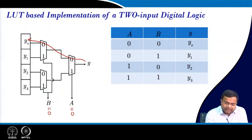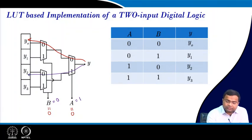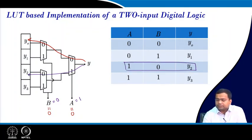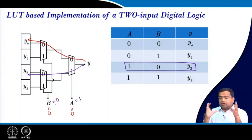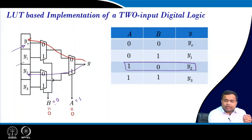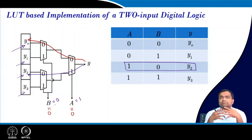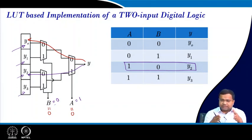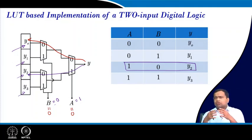If A is 0 and B is 1, it will route through a different path and y2 will be selected. So the output maps to that particular stored value based on the status of the select lines. In this architecture you can realize any of the 16 logical functions by suitably storing these four elements. And this is very fast because it is just a multiplexer — it is almost a simultaneous parallel operation and Y gets its value very fast.